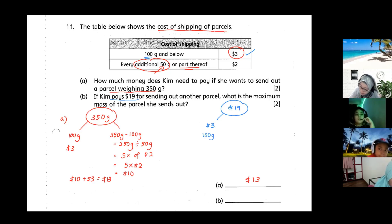The balance will be 19 dollars minus three dollars, this will give me 16 dollars. So now you ask yourself, how many two dollars are there in 16 dollars? So what you're going to do is 16 dollars divided by two dollars equals to eight, that's eight times of 50 grams.